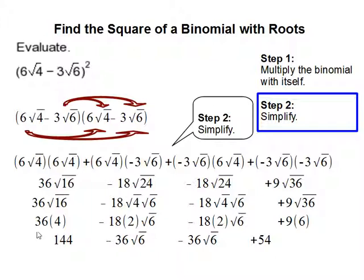Then we multiply. 36 times 4 is 144. 18 times 2 is 36, same goes for the other term. 9 times 6 is 54.